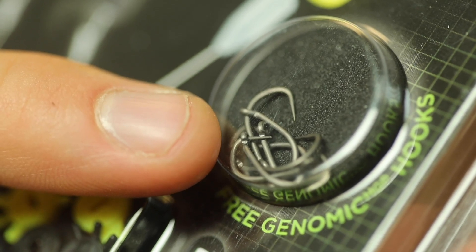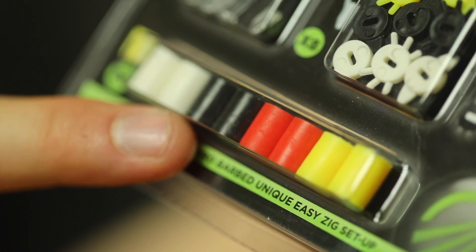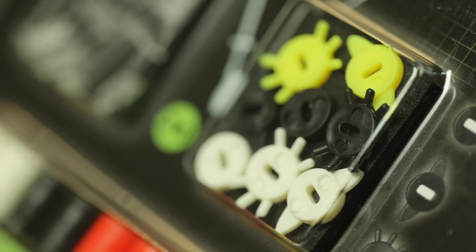So what exactly comes in the packet? In each of these Zig Beasts kits you get eight size 10 genomic hooks, you get eight of the Zig Beasts stems, eight buoyant barrel hook baits and also eight toppers which come in a variety of colours and shapes. So now let's take a quick look at how to actually use them.